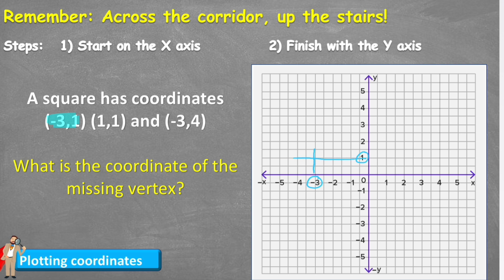Second one is (1,1), positive one on both axes, so positive one on the x, positive one on the y. Link them up and our cross would be just there.